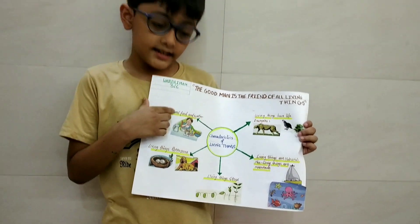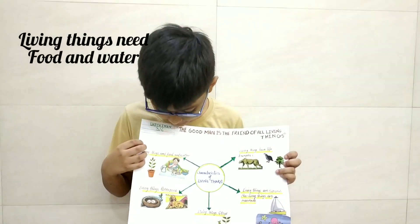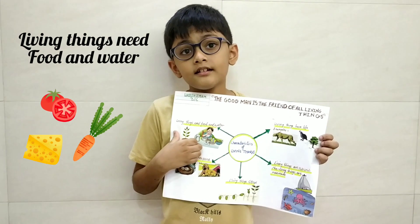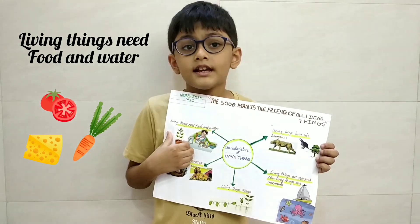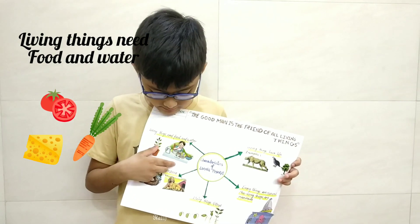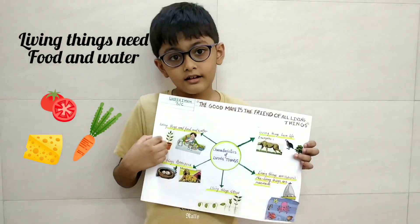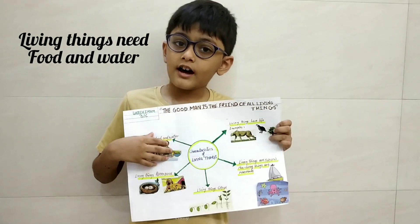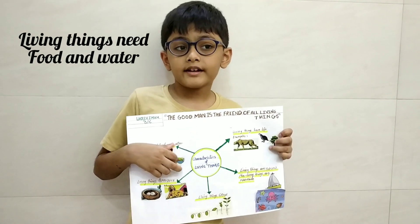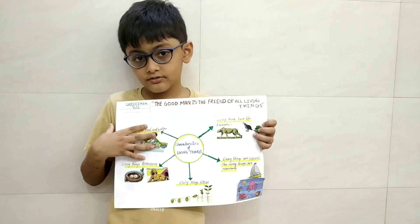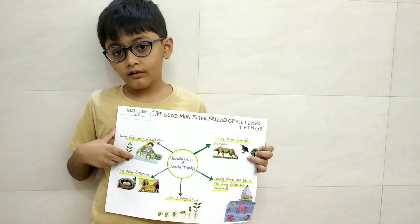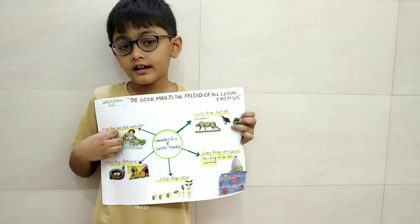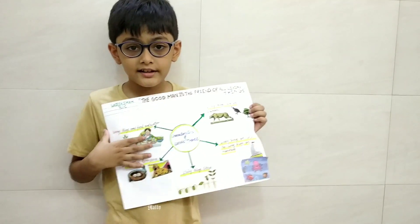Living things need food and water. Any living thing needs food and water, just as us. If we don't have any food and water, we may die of starvation or may get dehydrated. Plants need water as well, or they will die and there will be no fruits or anything.